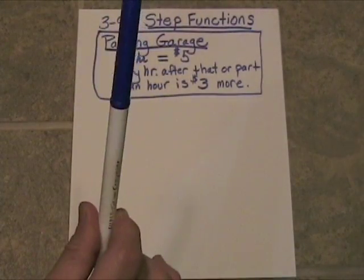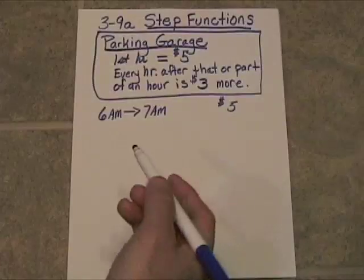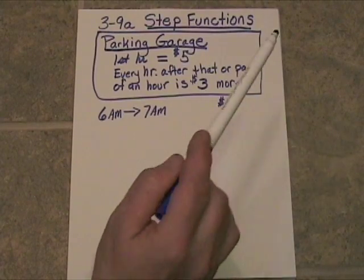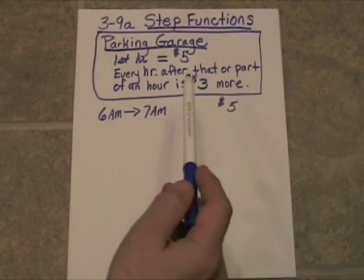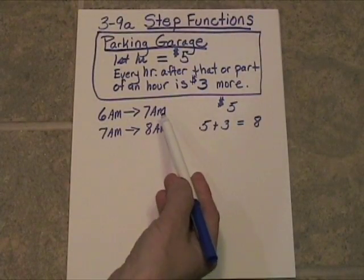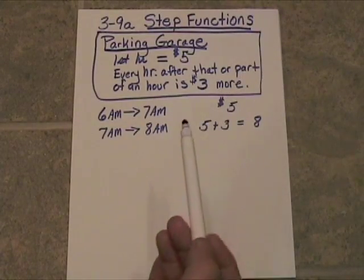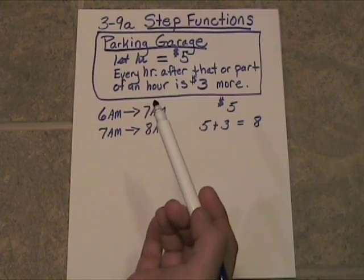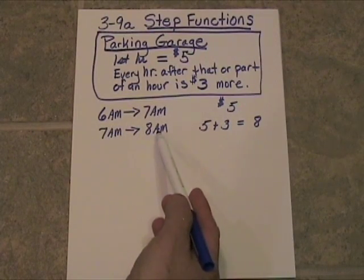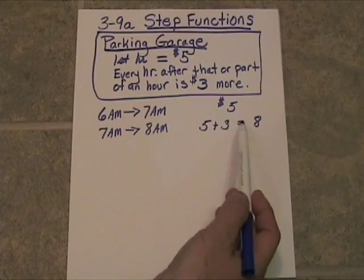We're going to take a look at the fee scale from 6 o'clock in the morning until noon. The first hour, from 6 a.m. to 7 a.m., is a flat $5. As long as they have their car out by 7 a.m., it's only going to cost them $5. At an instant after 7 a.m., the price goes up — it's going to go up $3, even if he's only there for a fraction of a second after 7 a.m. So from 7 a.m. to 8 a.m., any time in between, he's going to be charged the original $5 plus $3 more, which is $8.